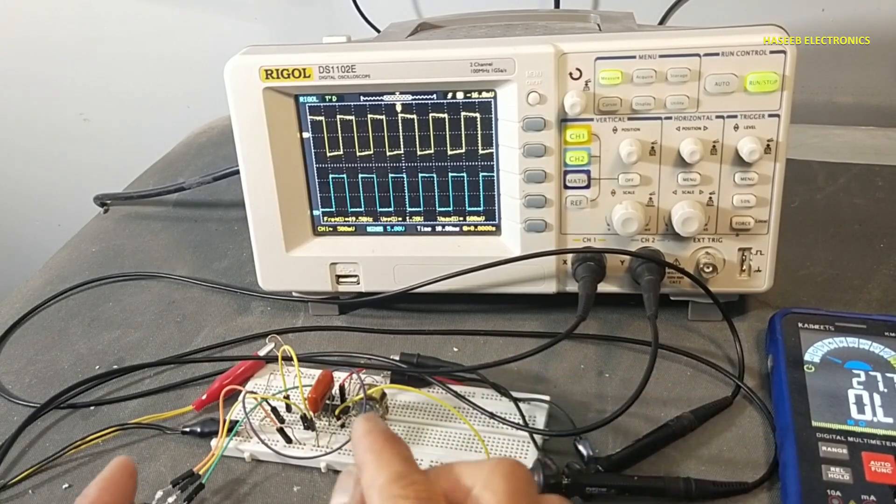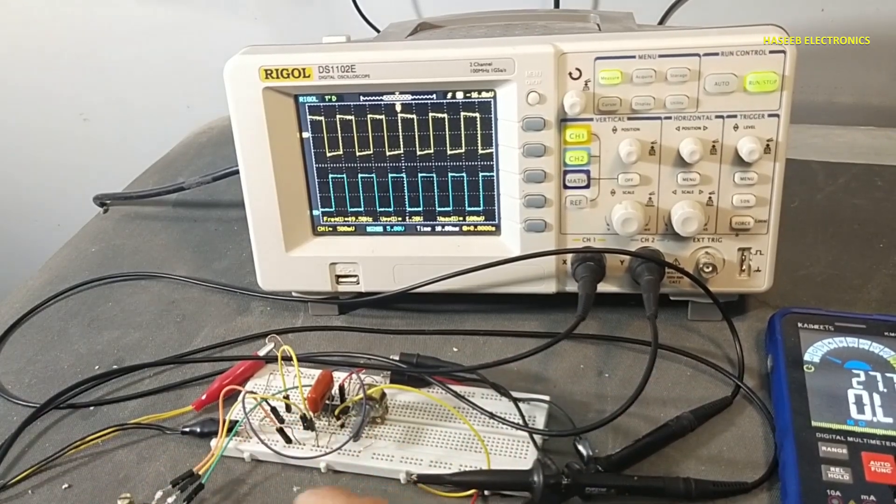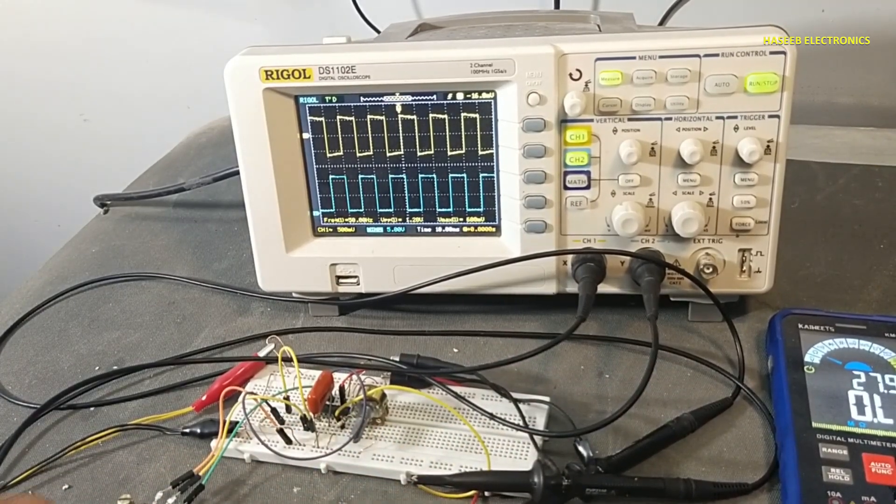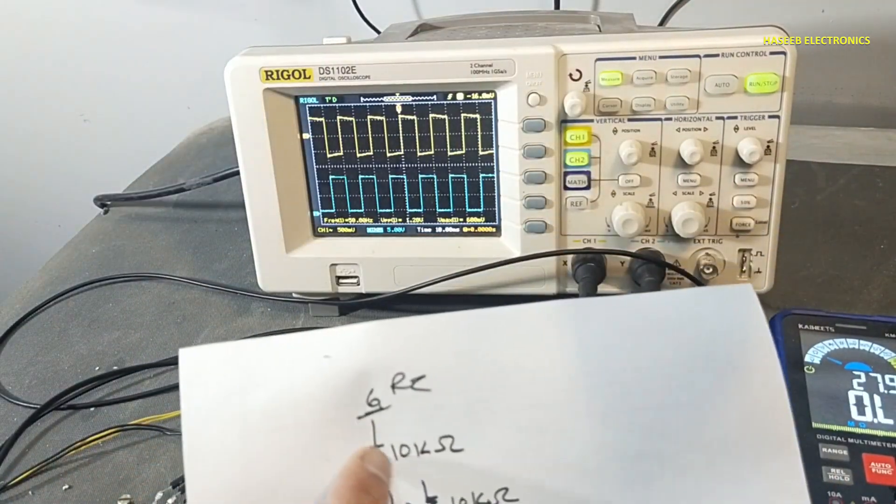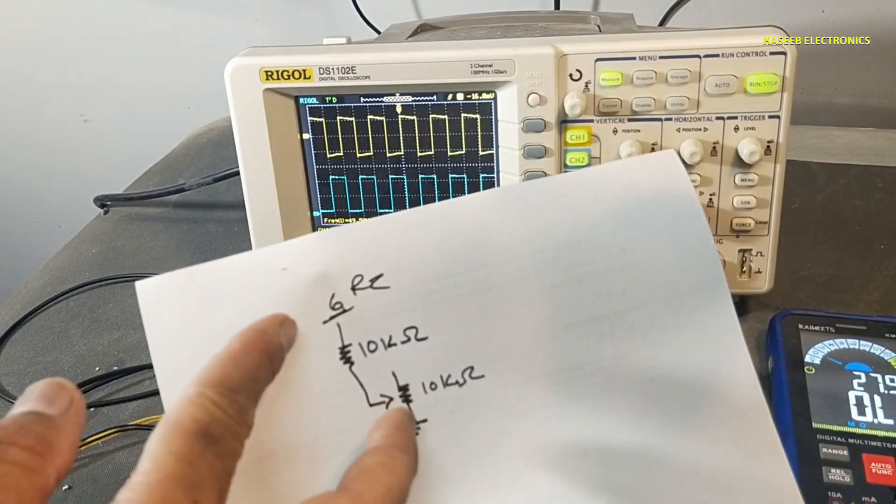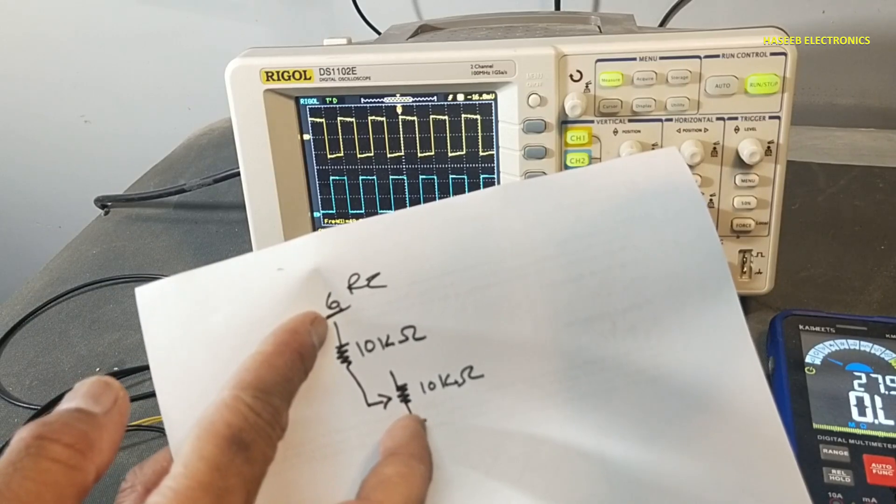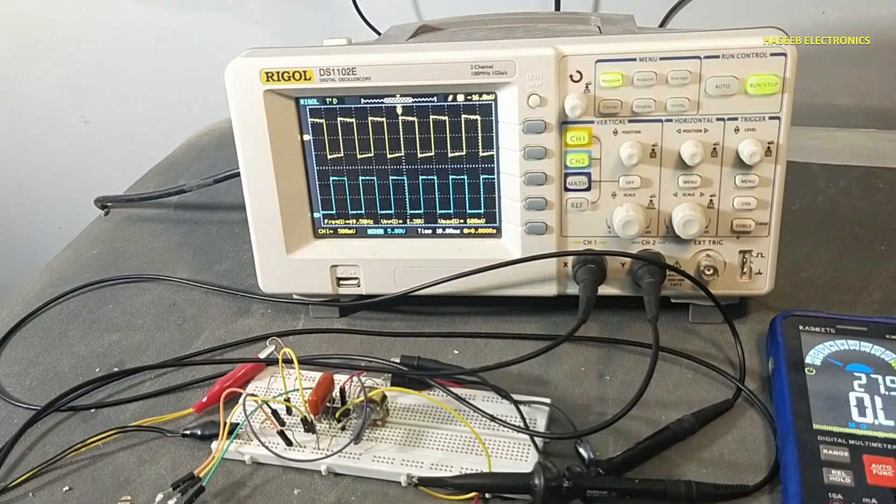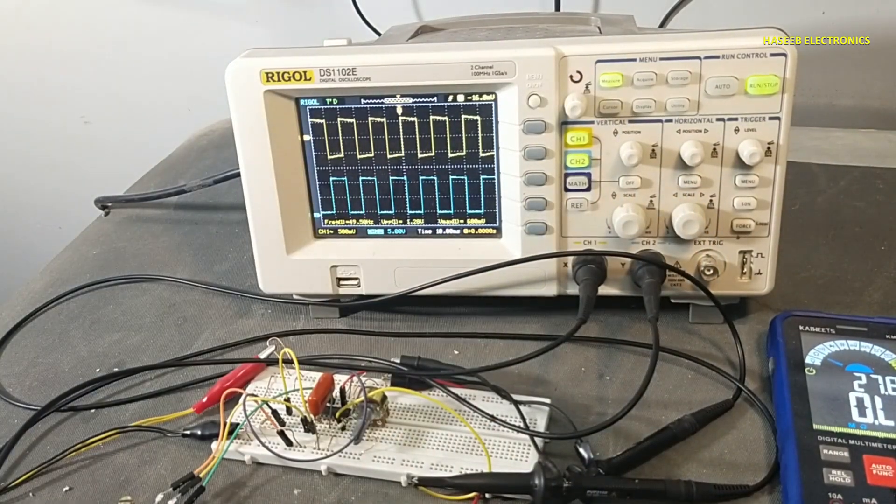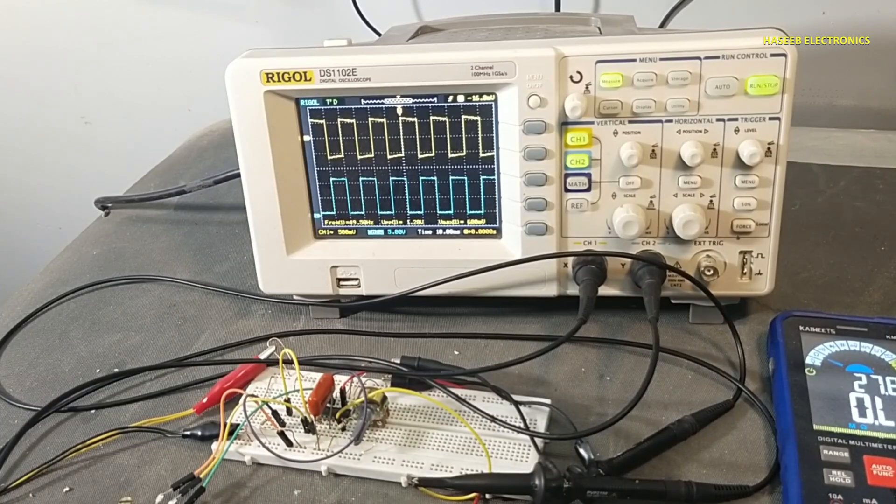Or we can measure the both resistor values from ground to this point. We can measure the resistor and we can select a fixed resistor to obtain the exact frequency.